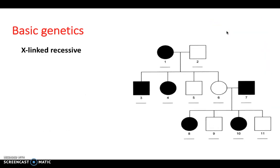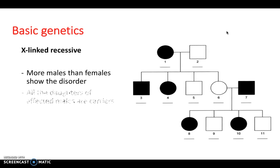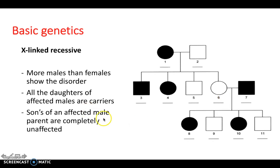Next, we have X-linked recessive. Now, more males than females show this disorder. And all the daughters of affected males are carriers. So when we see an affected male, we see daughters that are carriers. Sons of an affected male parent are completely unaffected. So here you can see this. So the male parent is affected here. These daughters would be carriers. That's a slightly incorrect shade in there. But the males would be completely unaffected there.